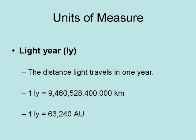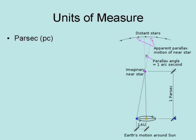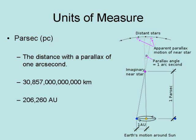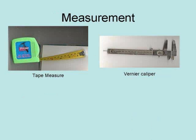One light year is also equal to 63,240 astronomical units. The next unit of measure for space is the parsec. This is the distance with a parallax of one arc second. One parsec equals 30,857,000,000 kilometers, or 2,006,260 astronomical units, and it is 3.26156 light years.